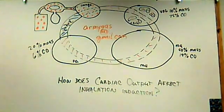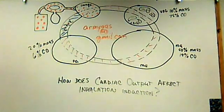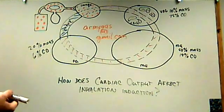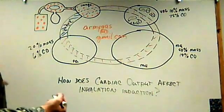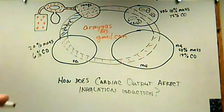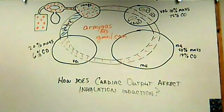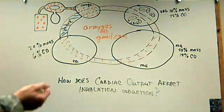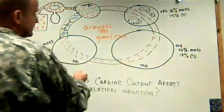We know that the blood flow is greatest to the vessel-rich group, next greatest to the muscle group, and then to the fat group. I would also like you to remember the size of our arteries and arterioles in each of these groups, and that resistance to flow varies in each of these compartments.